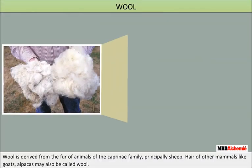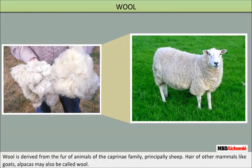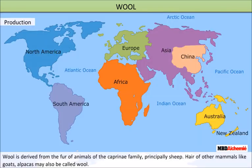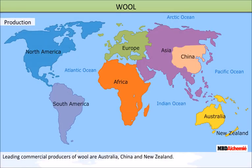Wool is derived from the fur of animals of the caprinae family, principally sheep. Hair of other mammals like goats and alpacas may also be called wool. The leading commercial producers of wool are Australia, China, and New Zealand.